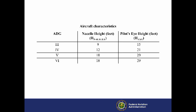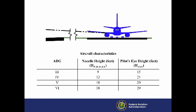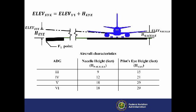The aircraft characteristics table in the AC contains the information you need by ADG to calculate the height of the pilot's eye at the V1 point, which equals the elevation at the V1 point plus the height of the pilot's eye above the runway.